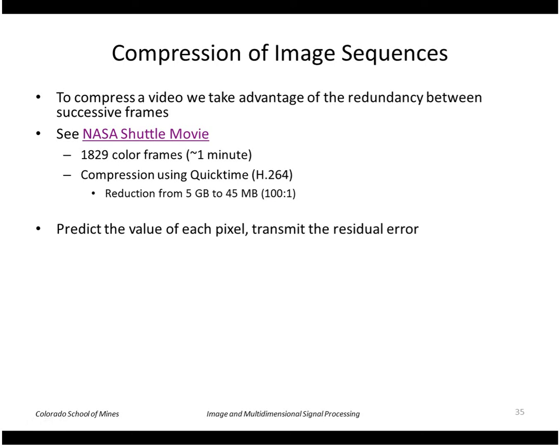So again we'll predict the value of each pixel and transmit the residual error. The simplest way is just that the value of each pixel in the next image is the same as the value in the previous image. So that's called forward prediction.